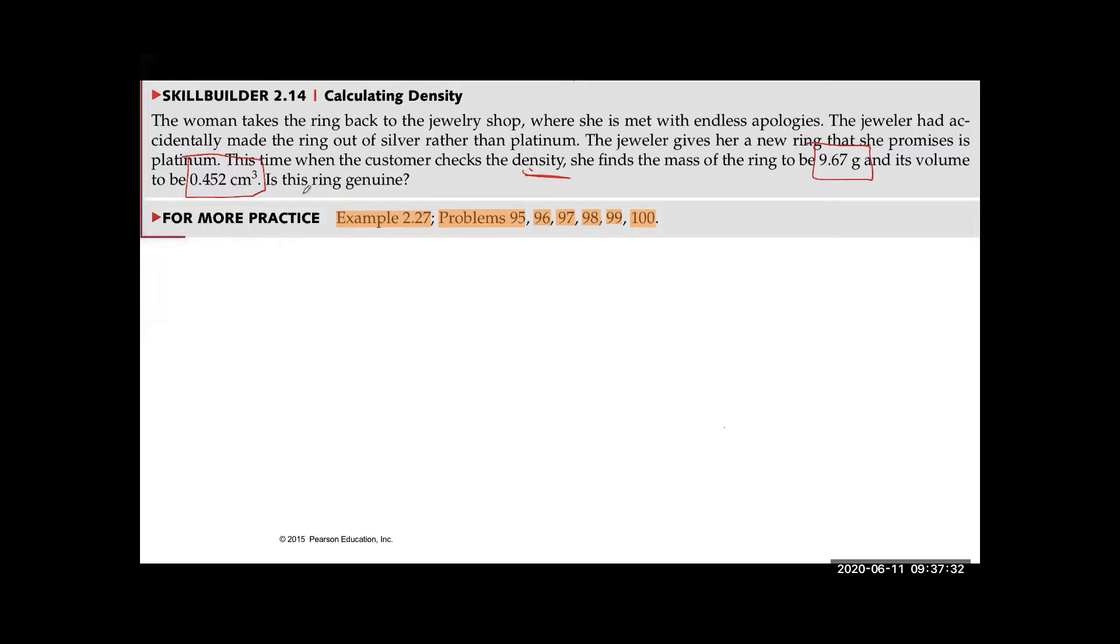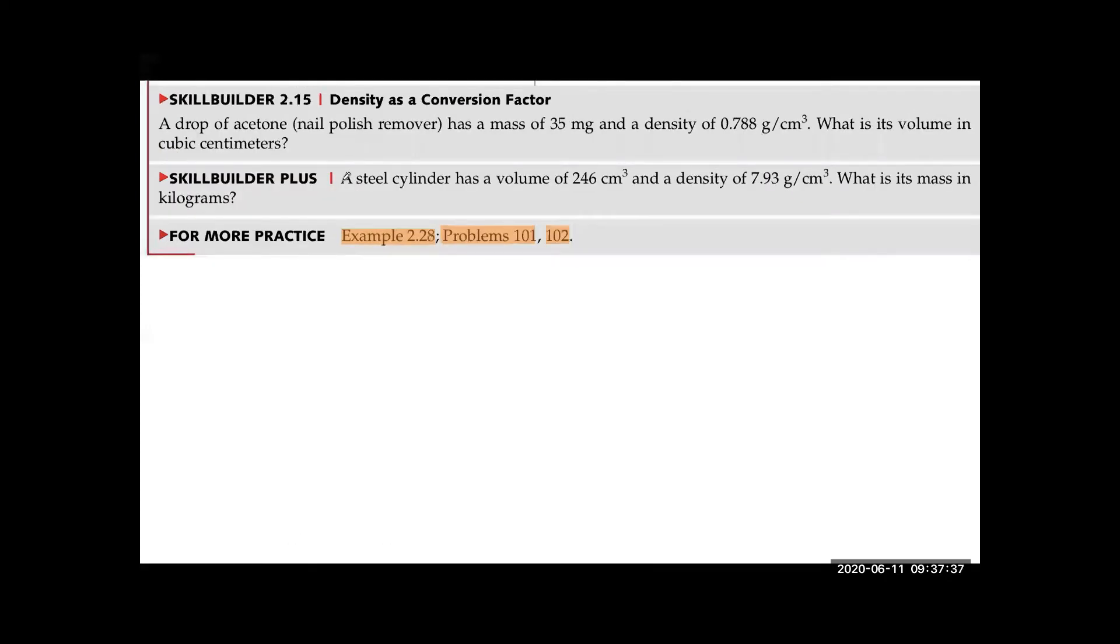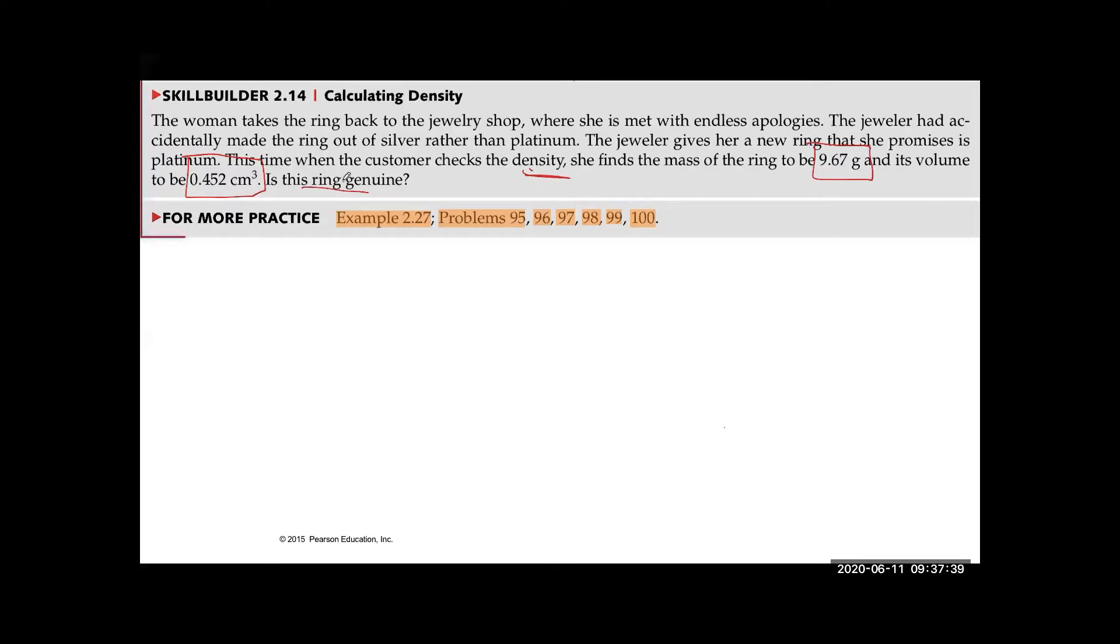And it is asking, is the ring genuine? So it's asking, is it really platinum or not? Density is a physical property. Platinum has a very specific density, I looked it up, it's 21.4 grams per cubic centimeter, and we want to know whether this piece of jewelry is actually platinum or not, and we can do that through density.